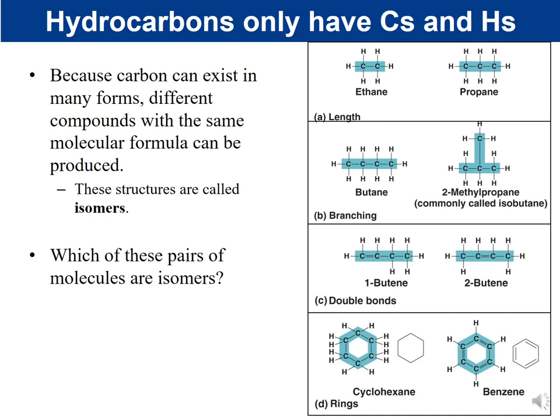Because carbon can exist in many forms, different compounds with the same molecular formula can be produced — these are called isomers. For example, ethane is C2H6 and propane is C3H8. Since they don't have the same molecular formula, ethane and propane are not isomers. Isomers would need to share the same molecular formula while having different structures.